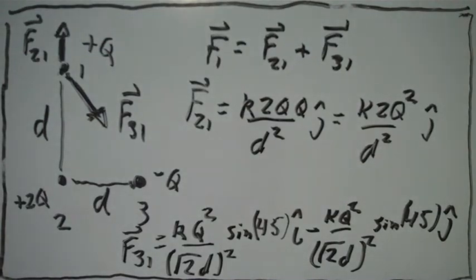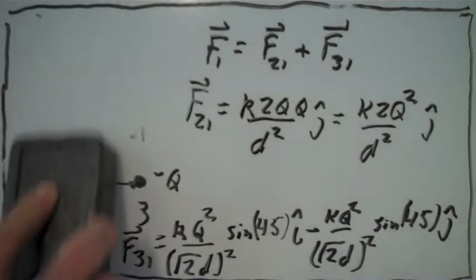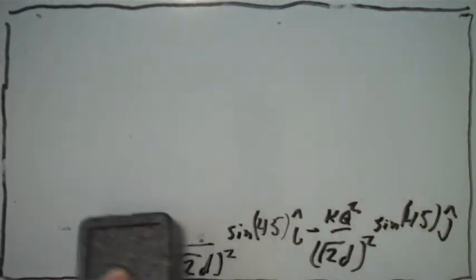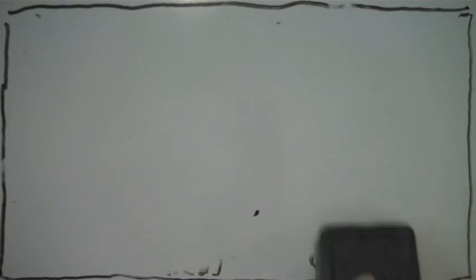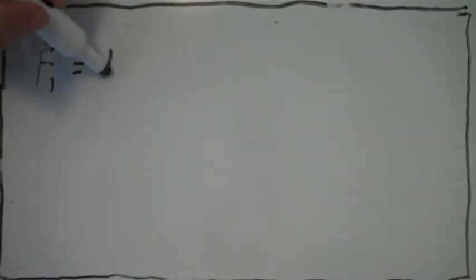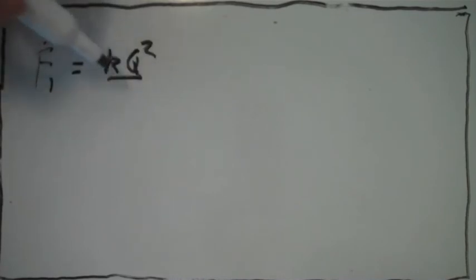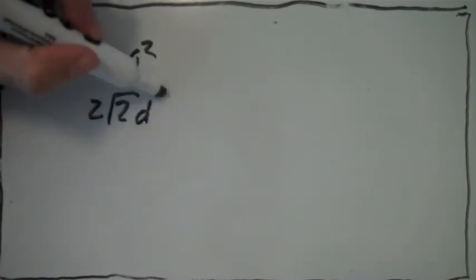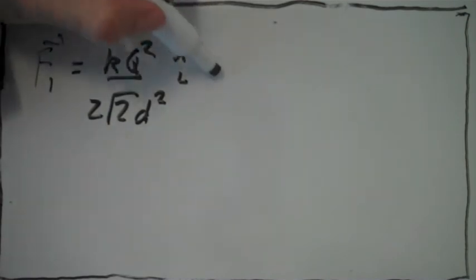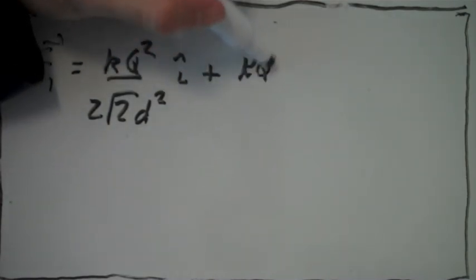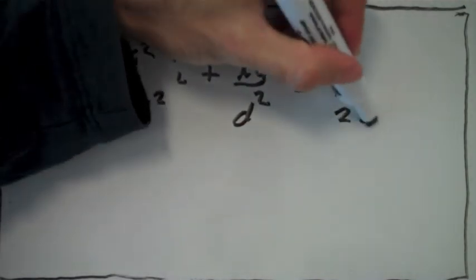Now we just add the two vectors F21 and F31. The total force on charge number 1 is equal to the sum of F21 and F31 — this big vector with a component in i and a component in j.